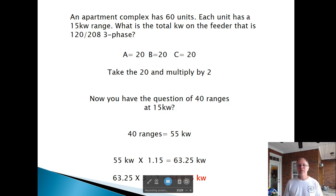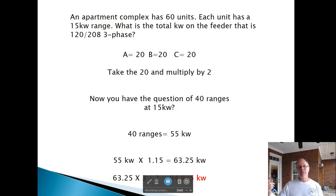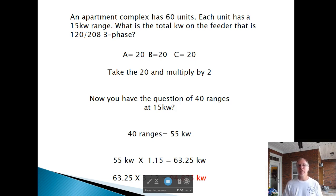An apartment complex has 60 units, each with a 15 kW range. Divide equally — 20, 20, 20 per phase. Double the largest: 40 ranges at 15 kW. Column C gives 55 kW. Add 15% for being 3 kW over 12: 55 times 1.15 equals 63.25 kW. Apply times 3 divided by 2 for three-phase, giving 94.875 kW.